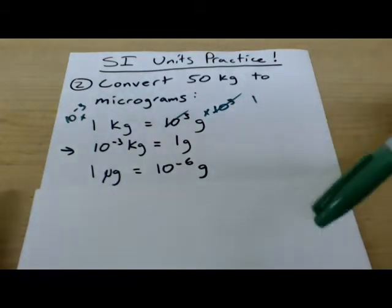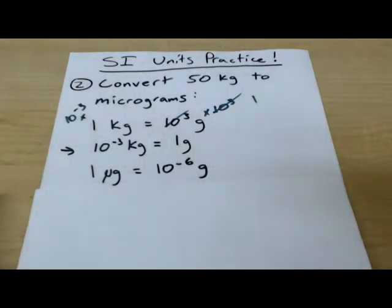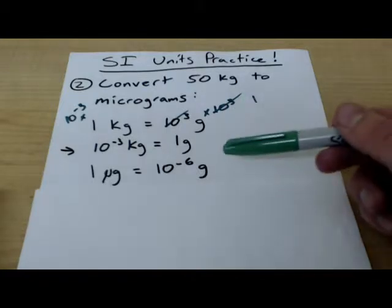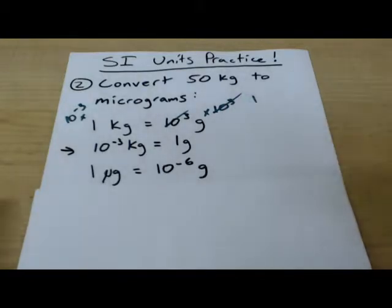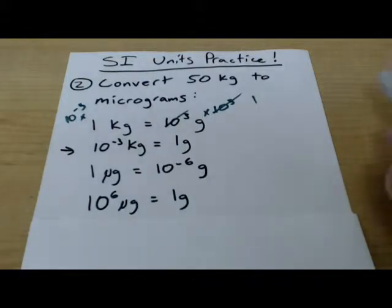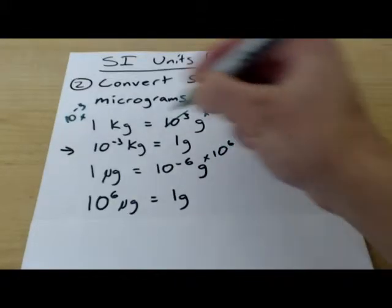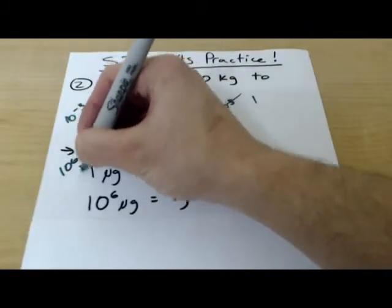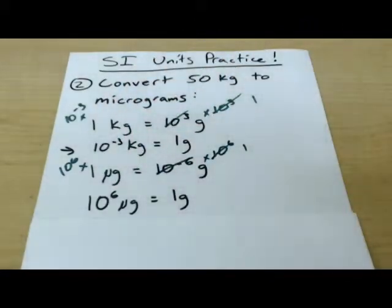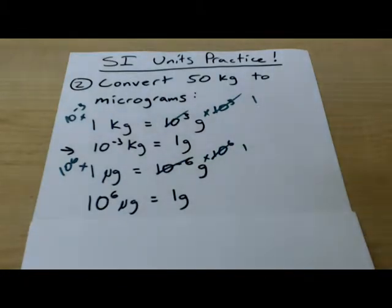If that doesn't make sense, it probably will in a few seconds here. So one microgram is equal to ten to the negative six grams. Same table. And so ten to the six micrograms is equal to one gram. So for this one, I just multiplied times ten to the six. Ten to the six, both sides. That gives us one. And this gives us ten to the six. Okay, so now we're ready to actually do the problem here.